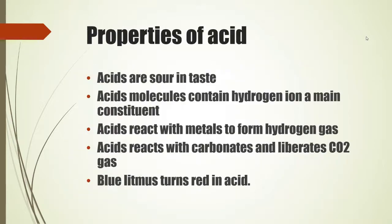Substances like vinegar used in daily life contain acetic acid. Orange contains citric acid. Tamarind contains tartaric acid. Tomato contains oxalic acid. Curd contains lactic acid. Lemon contains citric acid. Properties of acids: acids are sour in taste; acid molecules contain hydrogen ions as a main constituent; acid reacts with metals to form hydrogen gas; acid reacts with carbonates and liberates CO₂ gas; blue litmus turns red in acid. These five points have to be learned to identify whether a solution is acid or base.